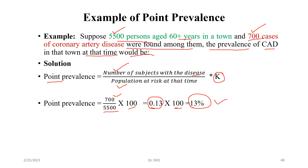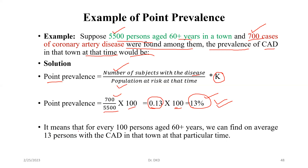Once we have this value, the important point is interpretation. What is the meaning of this 13%? We can interpret it like this: for every 100 persons aged 60 plus years — because we are talking in percentage — we can find, on average, 13 persons with CAD (coronary artery disease) at that particular time when we found these cases. This is what we need to understand about point prevalence. Thank you.